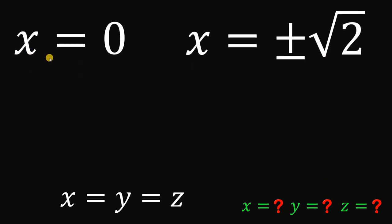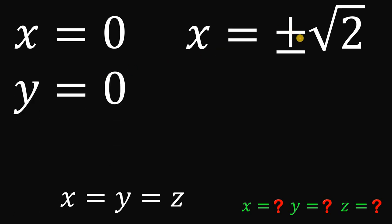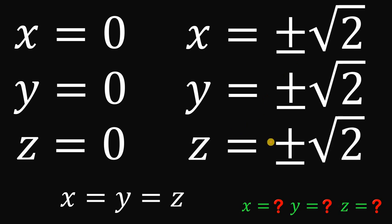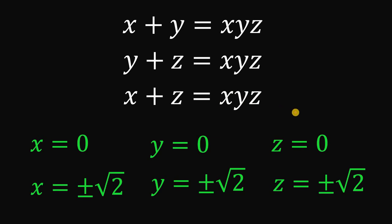Since x equals y equals z, the value of y and z follow from x. When x is 0, y is also 0, and z is also 0. When x is positive or negative square root of 2, y is also positive or negative square root of 2, and z is also positive or negative square root of 2. So the values of x, y, and z that satisfy the three equations are: x equals 0, y equals 0, z equals 0; or x, y, and z all equal positive or negative square root of 2. And that is the answer. We are done.